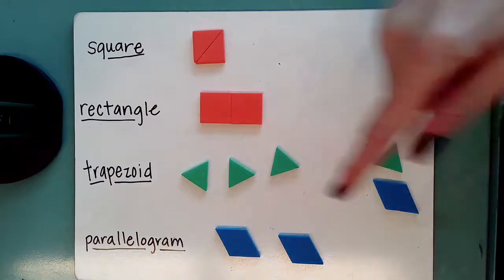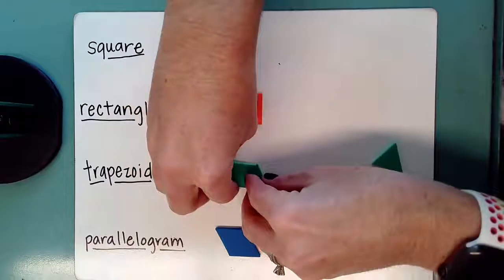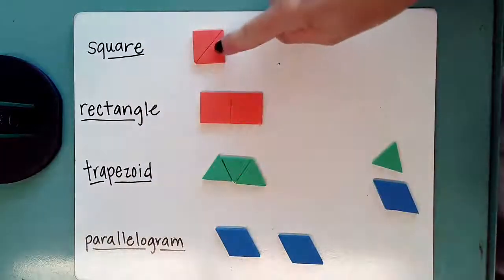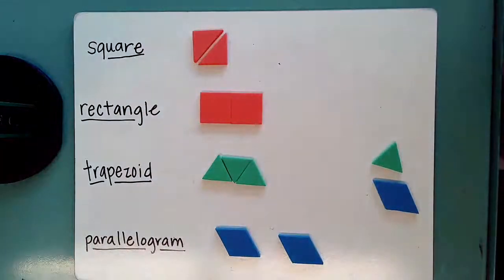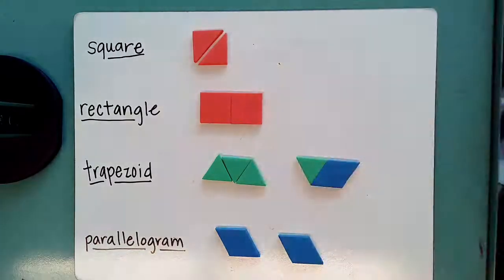We can also create a trapezoid using three triangles. Notice these triangles look a little bit different than the triangles we used up here. We can also make a trapezoid by putting a rhombus and one triangle together.